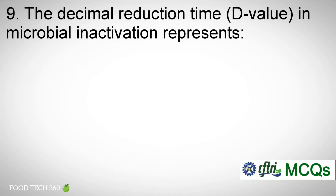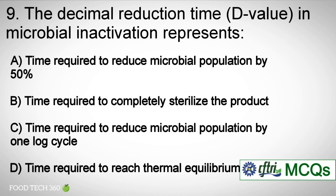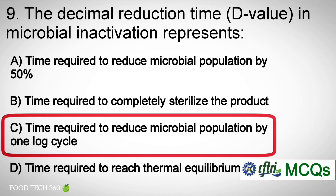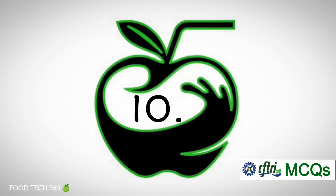Question number 9. D-value in microbial inactivation represents: Options: A. Time required to reduce microbial population by 50%, B. Time required to completely sterilize the product, C. Time required to reduce microbial population by one log cycle, D. Time required to reach thermal equilibrium. Correct answer: C. Time required to reduce microbial population by one log cycle.